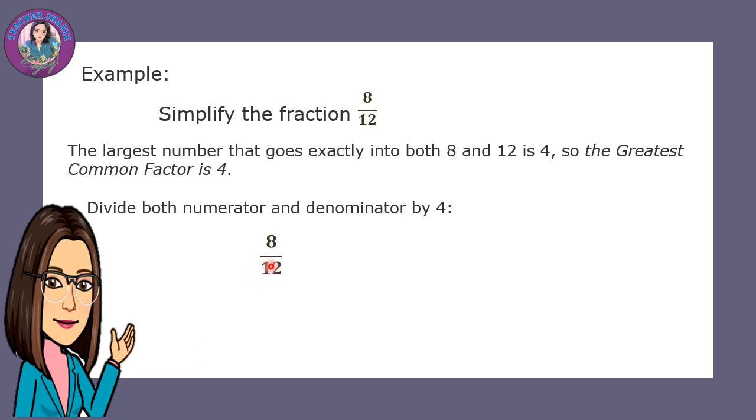So we have 8 twelfths divided by 4 fourths, or 8 divided by 4 equals 2, and 12 divided by 4 equals 3. The answer is two-thirds. That is as far as we can go. The fraction simplifies to two-thirds.